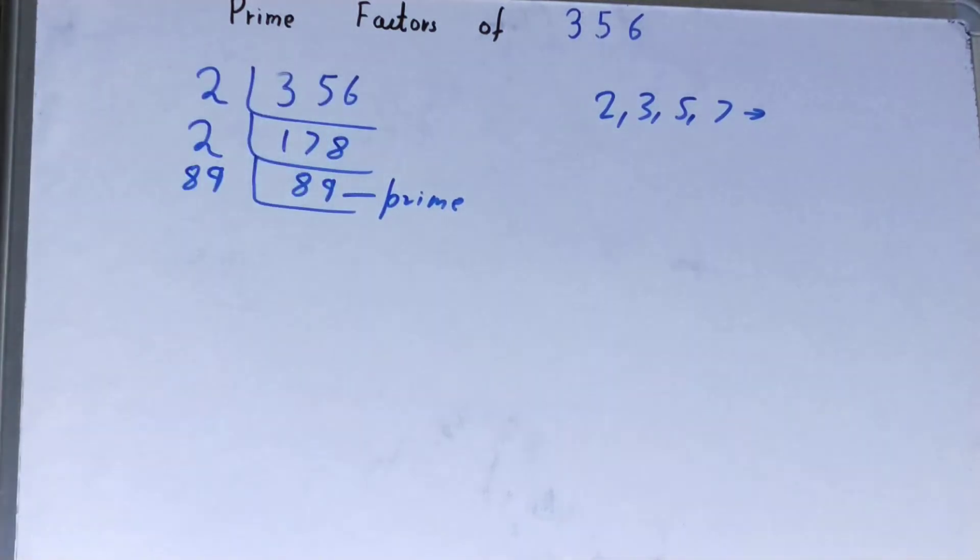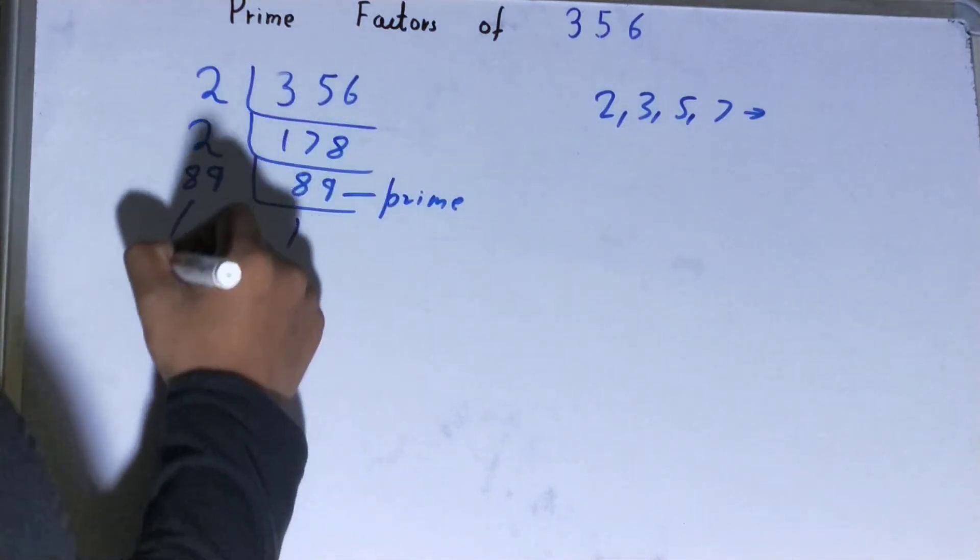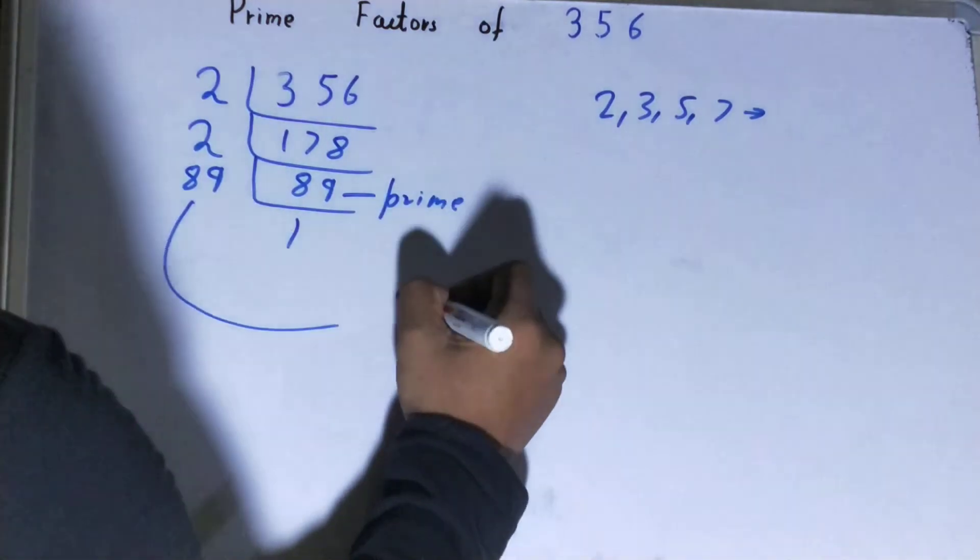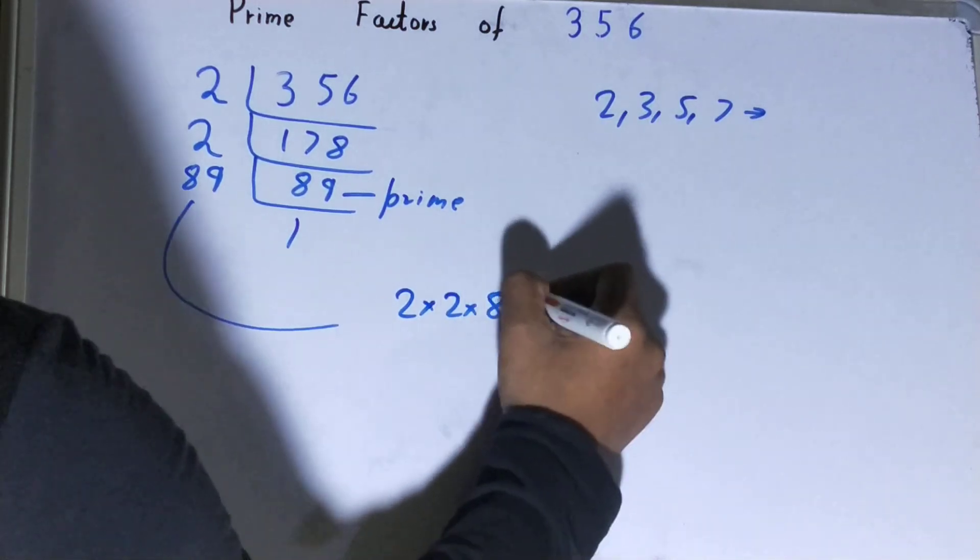When you do so, you will be left with 1. When you're left with 1, the work is done. Whatever you have on the left-hand side will be the set of prime factors for the number 356, that is 2 × 2 × 89.